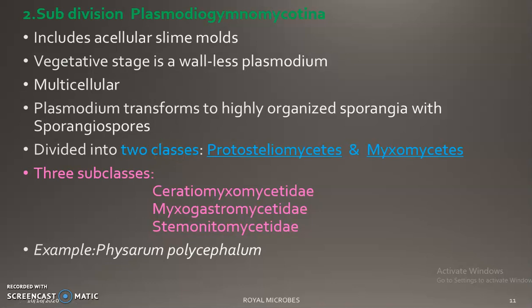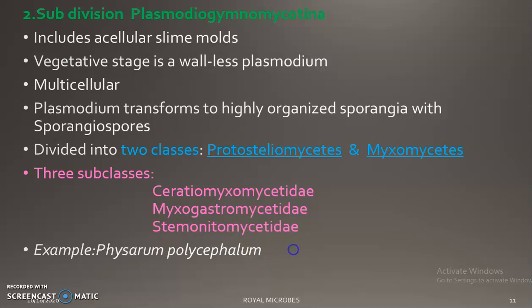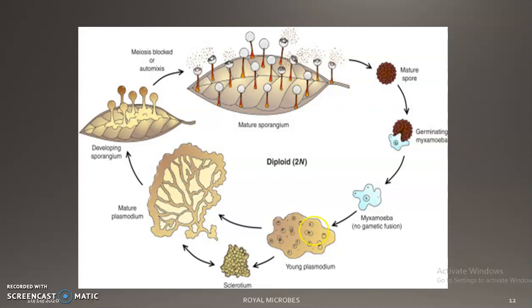Subdivision 2, Plasmodiogymno mycotina, includes acellular slime molds. The vegetative stage is a wall-less plasmodium — a multicellular form. The plasmodium transforms into highly organized sporangia with sporangiospores. It is divided into two classes: Protosteliomycetes and Myxomycetes, with three subclasses: Ceratiomyxomycetidae, Myxogastromycetidae, and Stemonitomycetidae. An example is Physarum polycephalum.